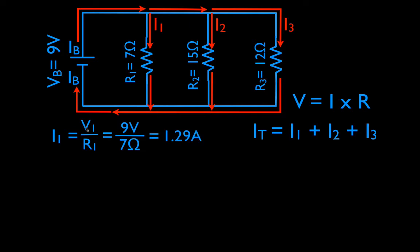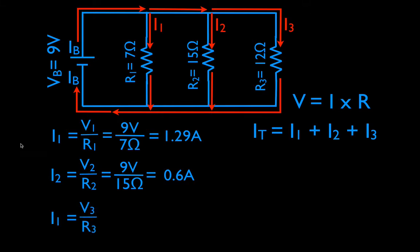We divide nine volts by seven ohms and get I1 equals 1.29 amps. For branch two: nine volts divided by fifteen ohms gives I2 equals 0.60 amps. For branch three: nine volts divided by twelve ohms gives I3 equals 0.75 amps. We used Ohm's Law — I equals V divided by R — and the voltages are all the same nine volts while the resistances are different.